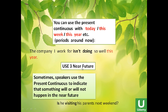Also, the present continuous can be used for the near future. Sometimes speakers use the present continuous to indicate something will or will not happen in the near future. For example: Is he visiting his parents next week? So 'next week' is near future — next week, next month, next year, and so on.